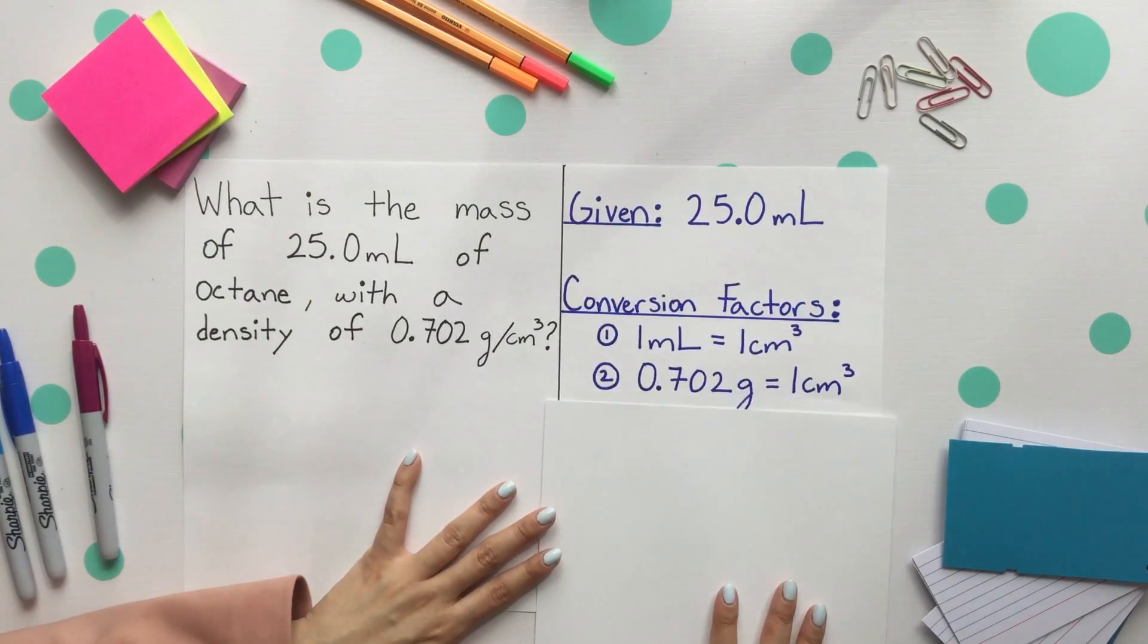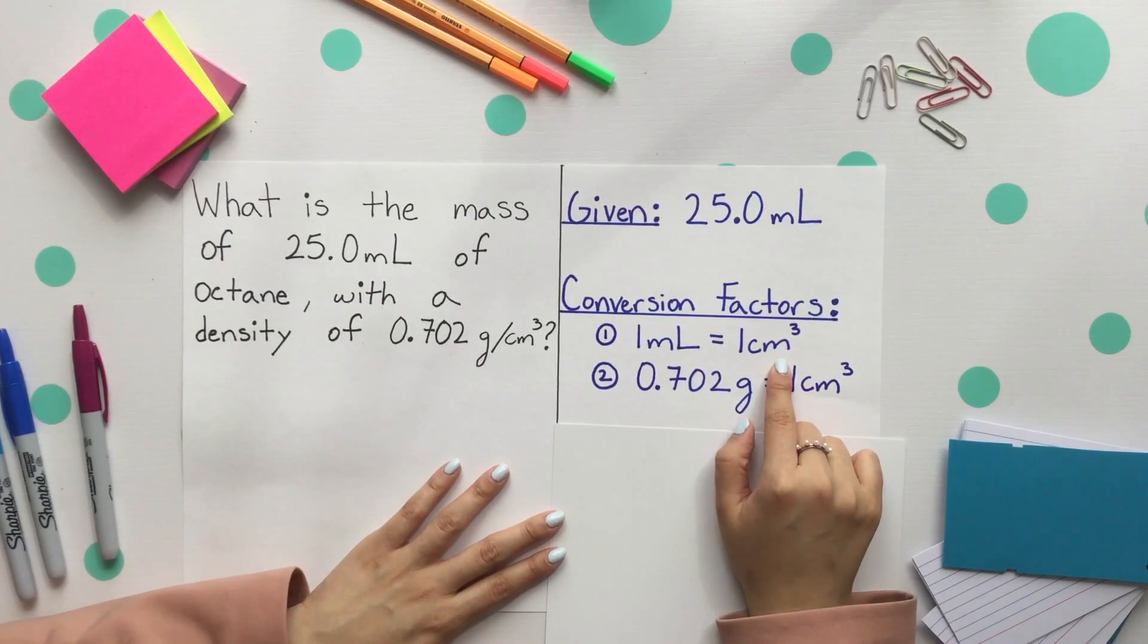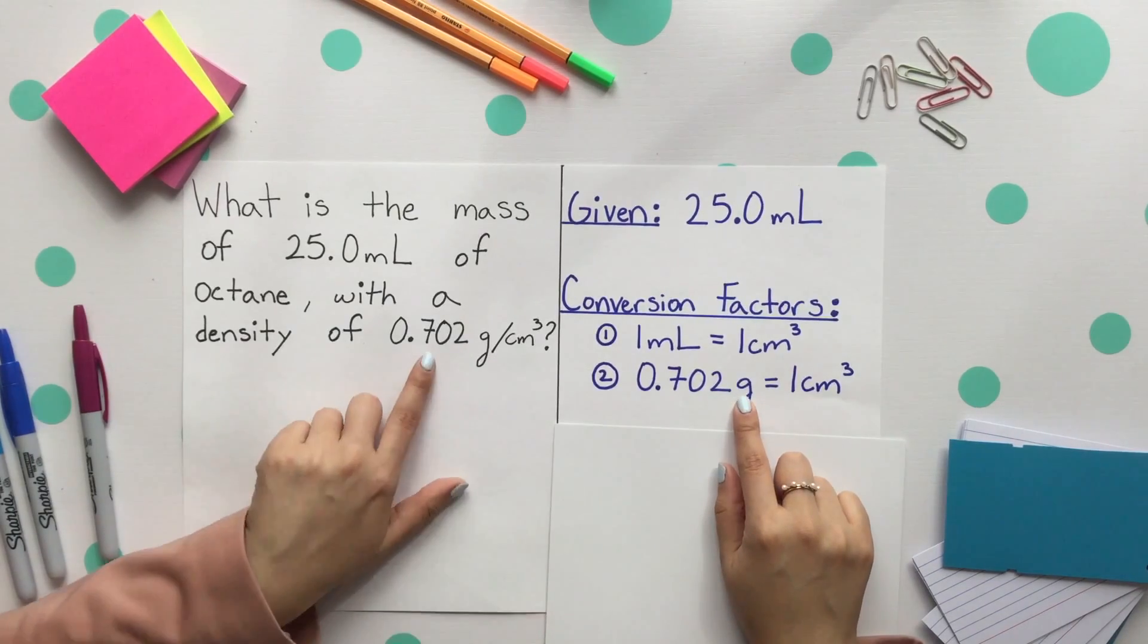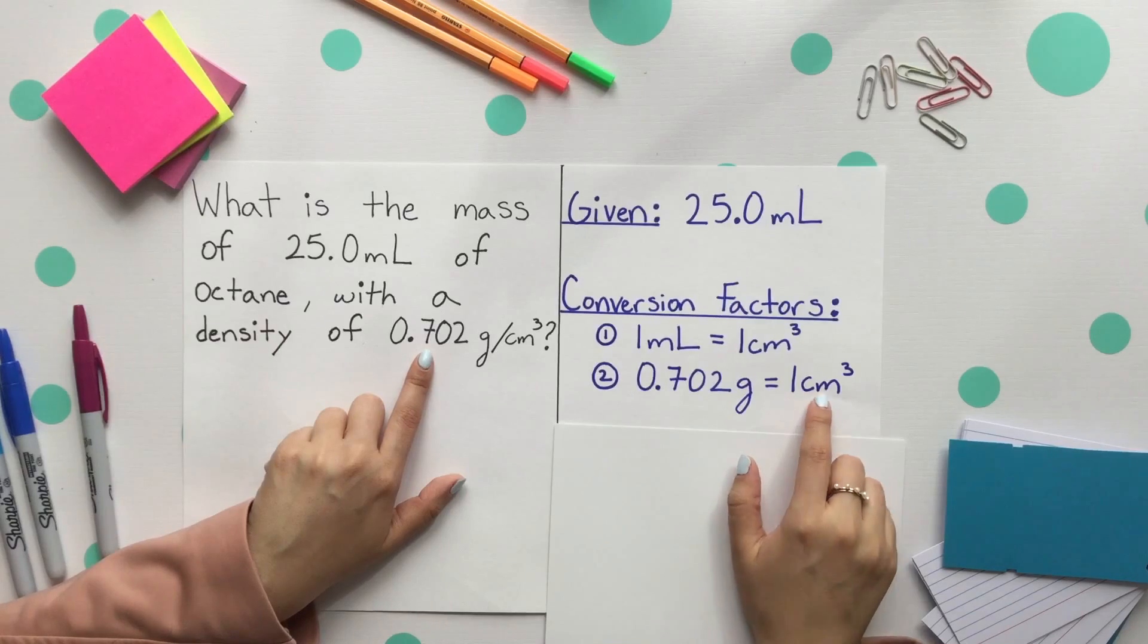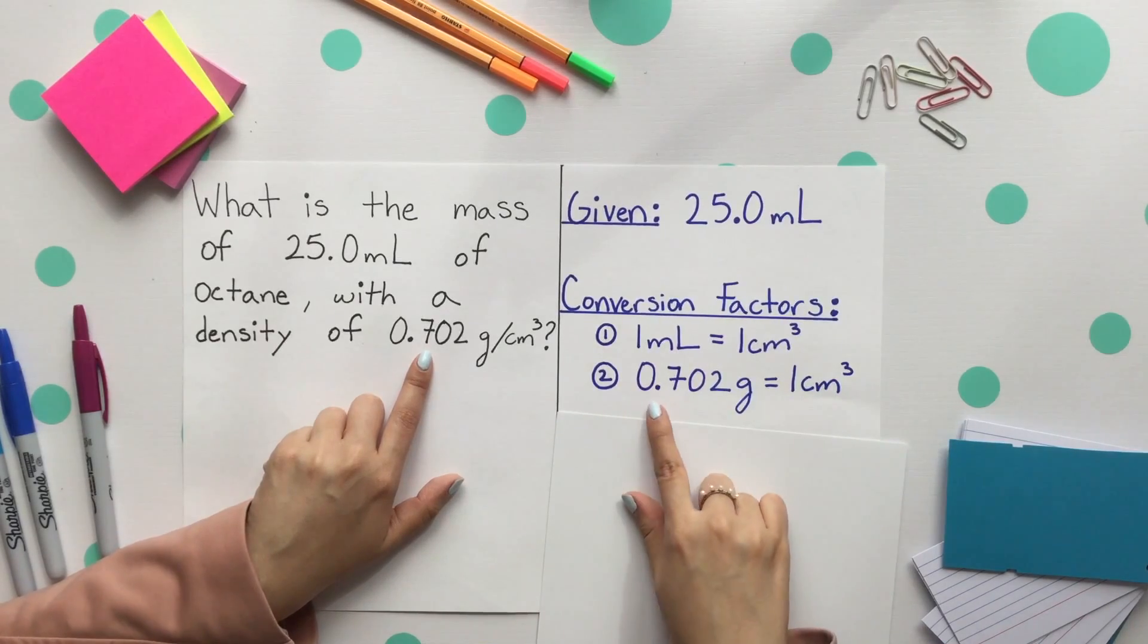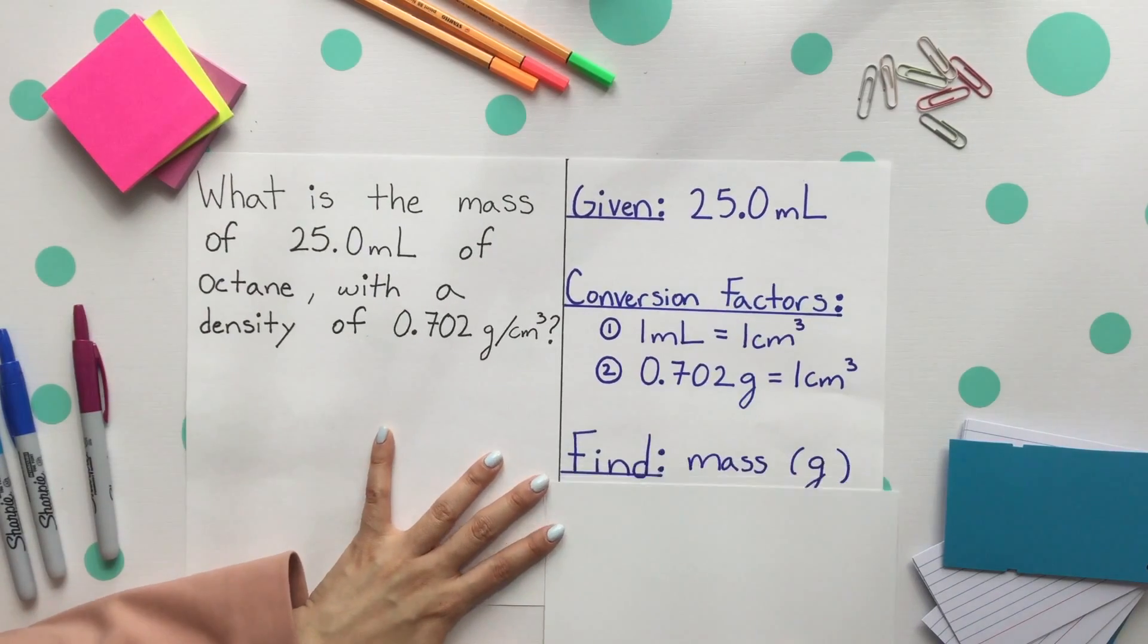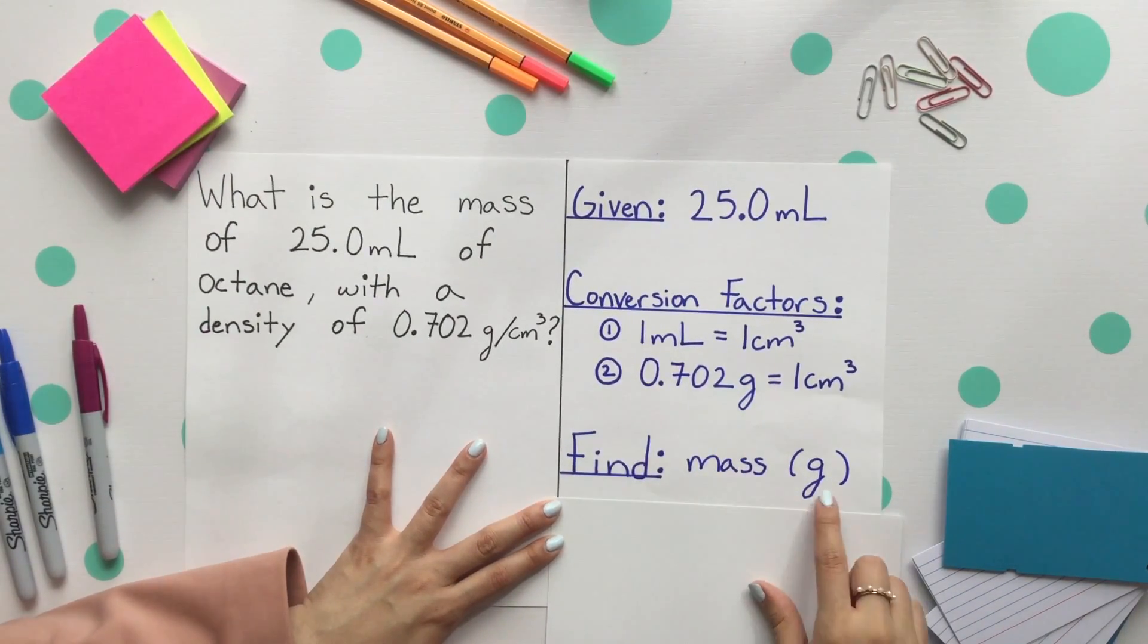Your conversion factors: one milliliter is equal to one cubic centimeter. Then we'll use this to get to grams using the density as our second conversion factor. So one cubic centimeter is equal to 0.702 grams. Lastly, we are finding mass. Mass, if it's not otherwise stated, is measured in grams.